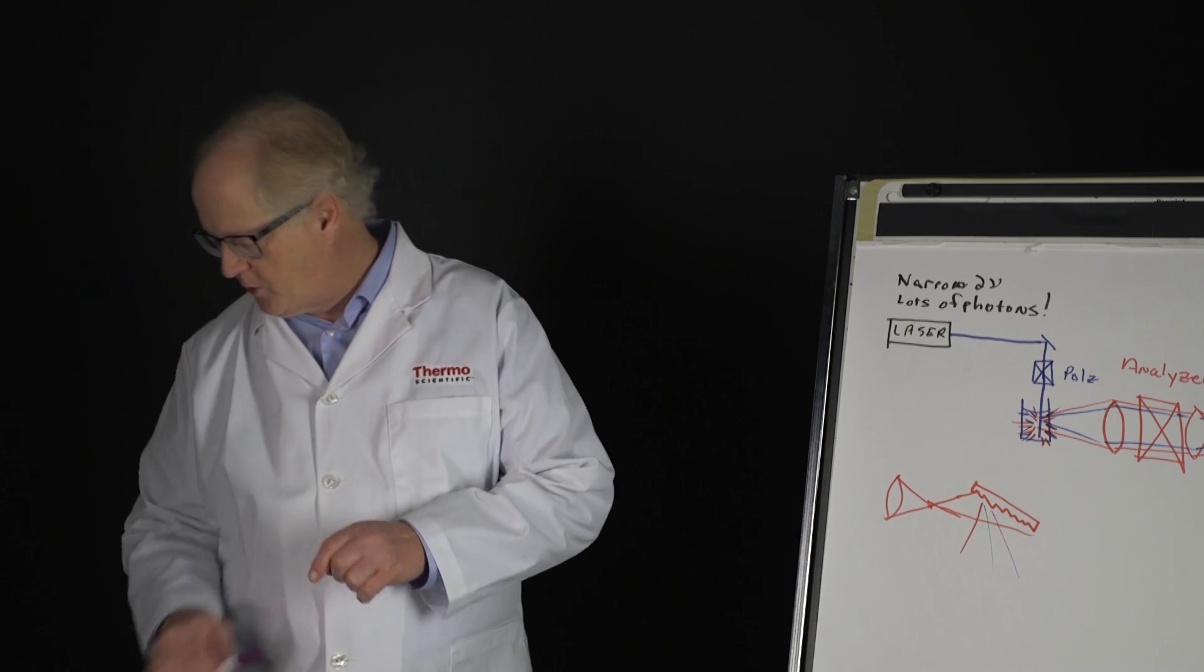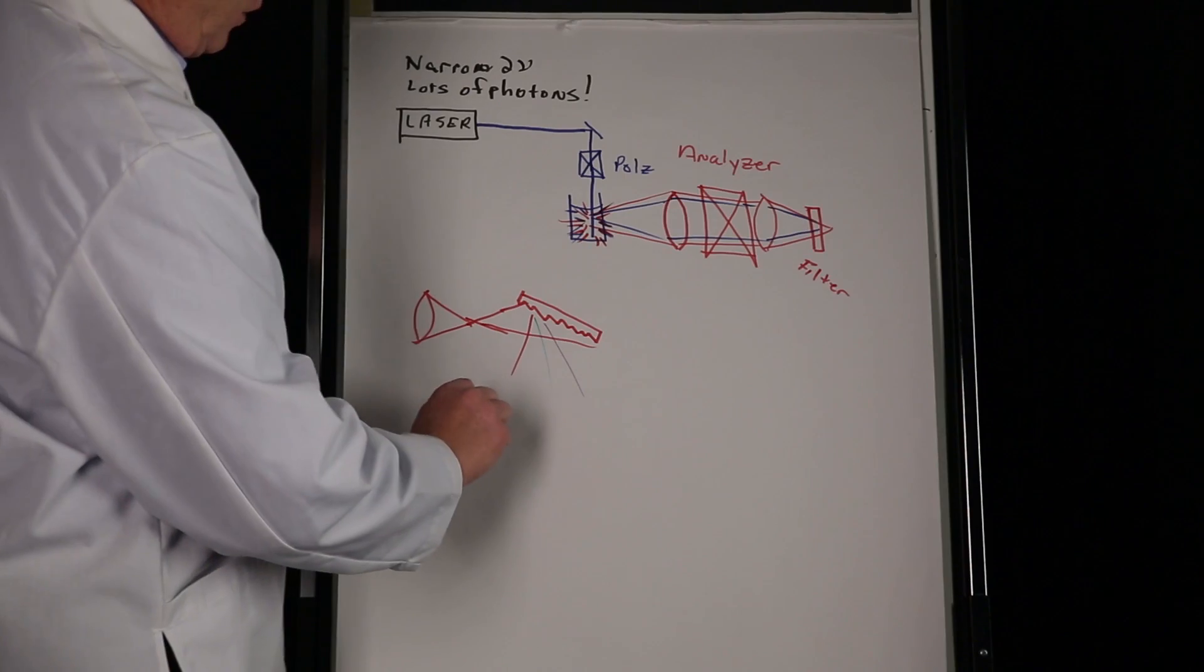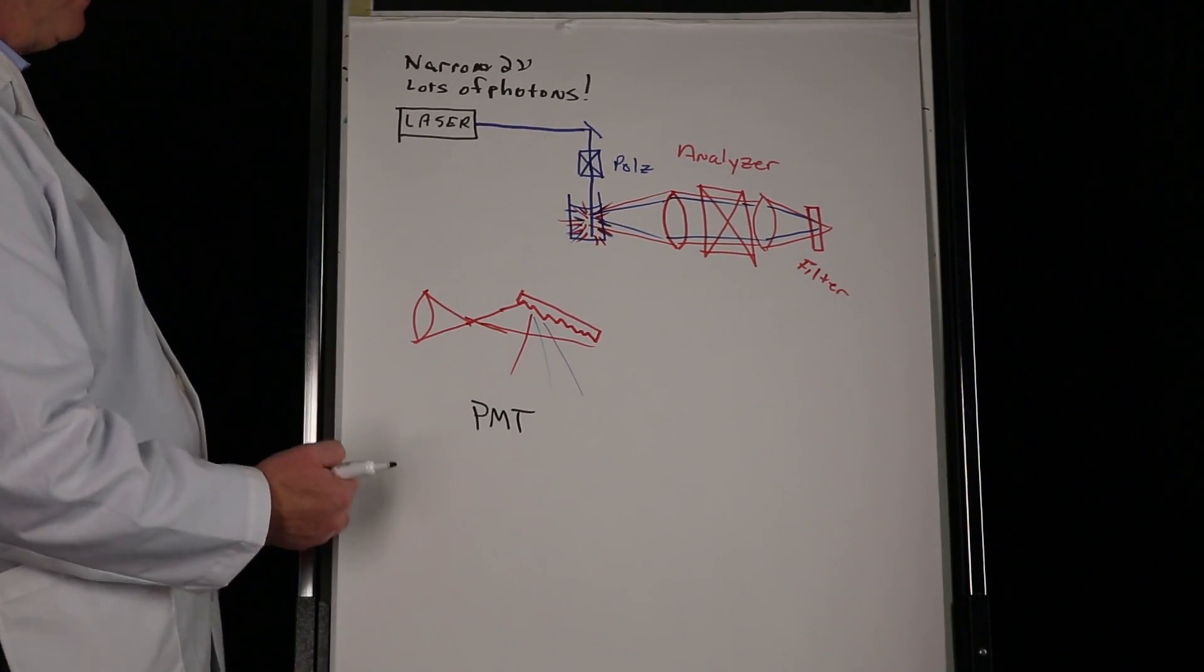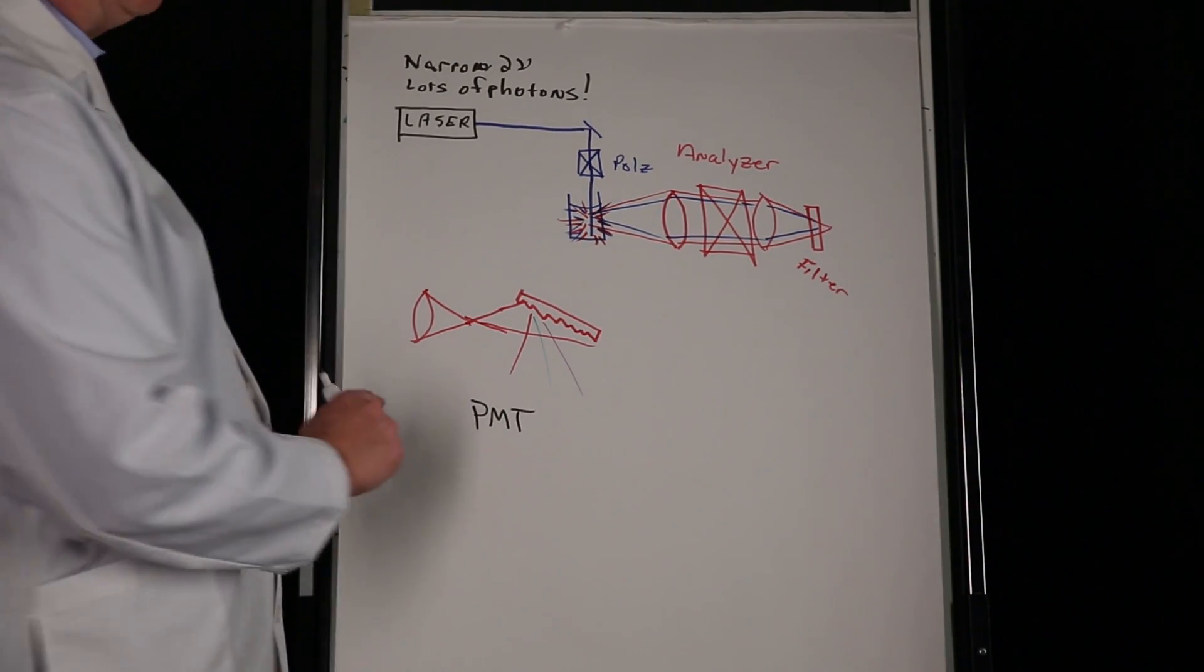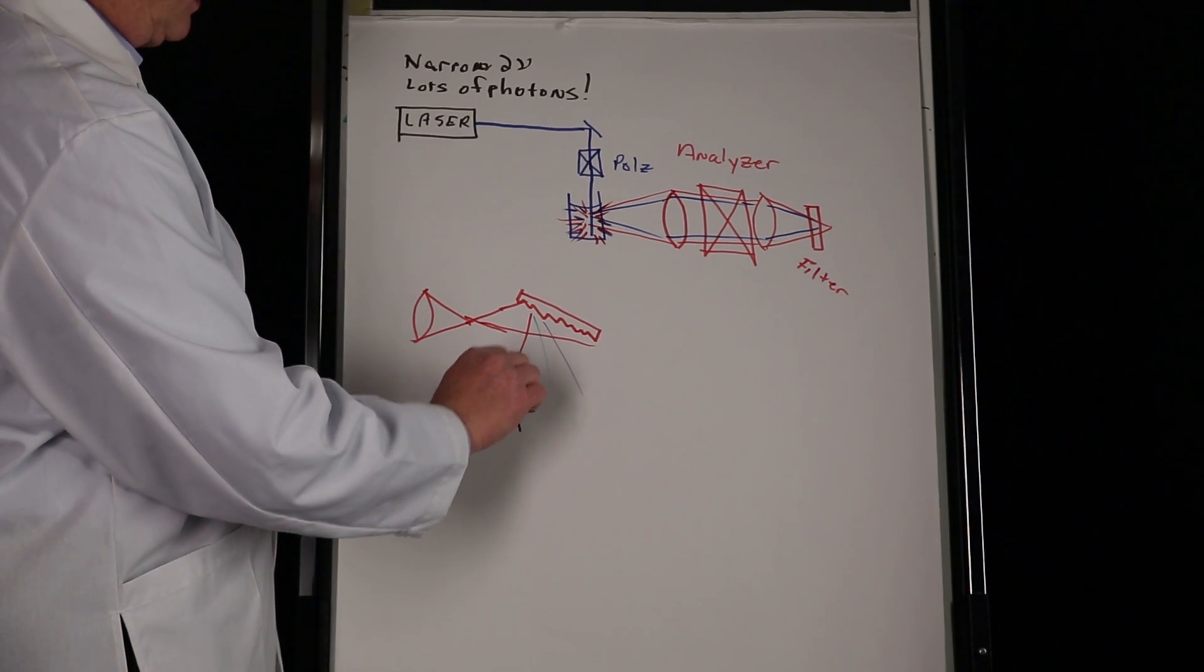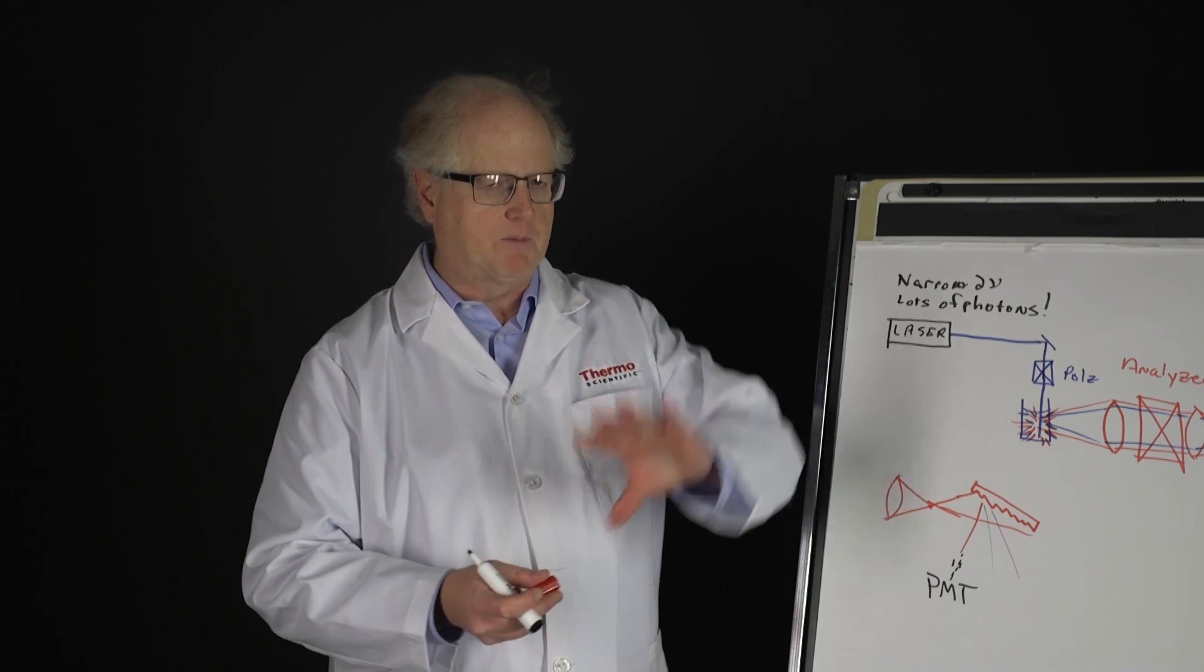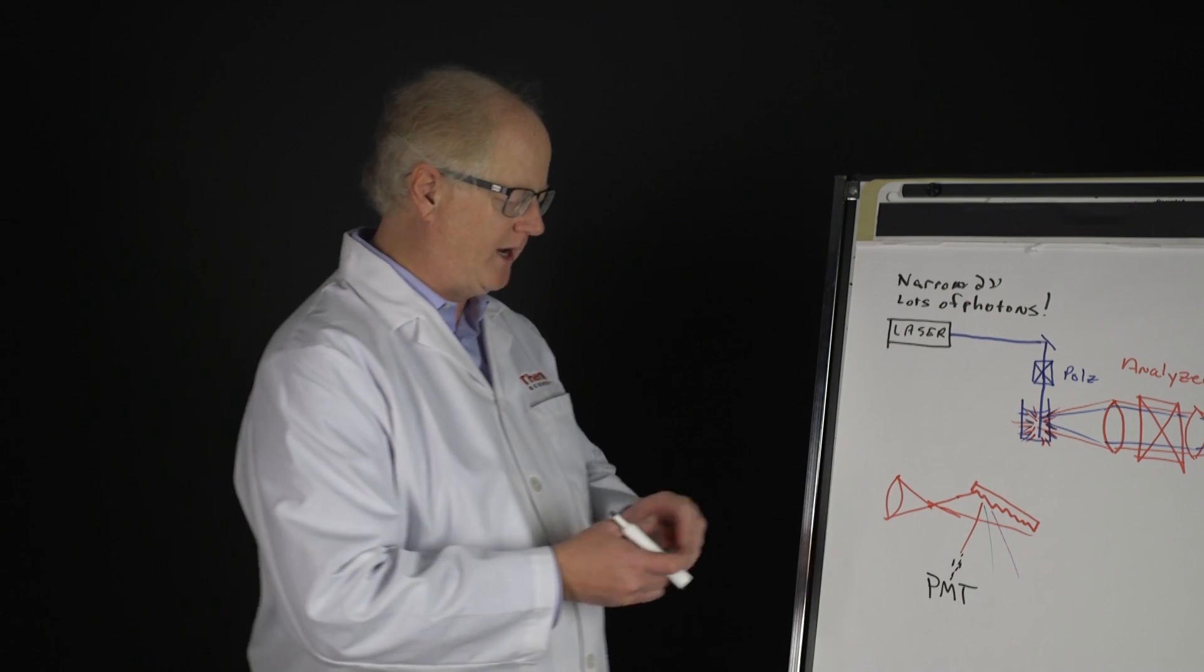Now in a classic Raman spectrometer, what I would then have is a photomultiplier tube, PMT, which we'll describe a little bit about how that works in the next video. That PMT, however, is a single point detector. So you would have a slit, a narrow slit. The light would travel through that slit, hit the PMT. And then in order to take the spectrum, you would have to rotate the grating. You'd have to rock that grating around.